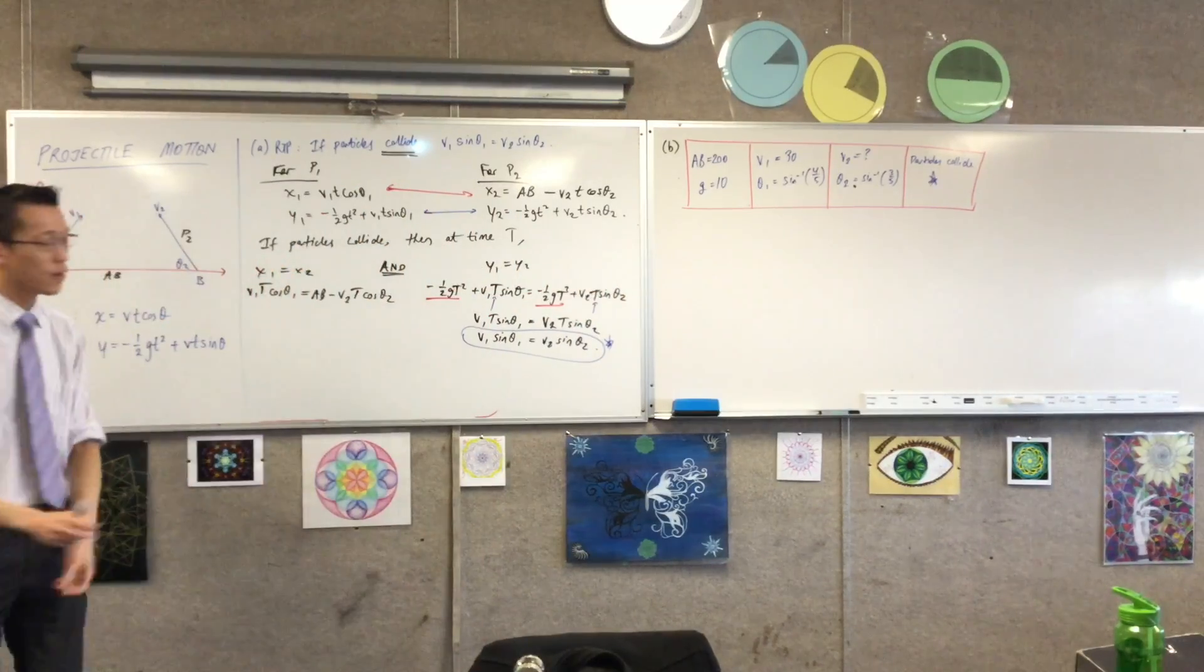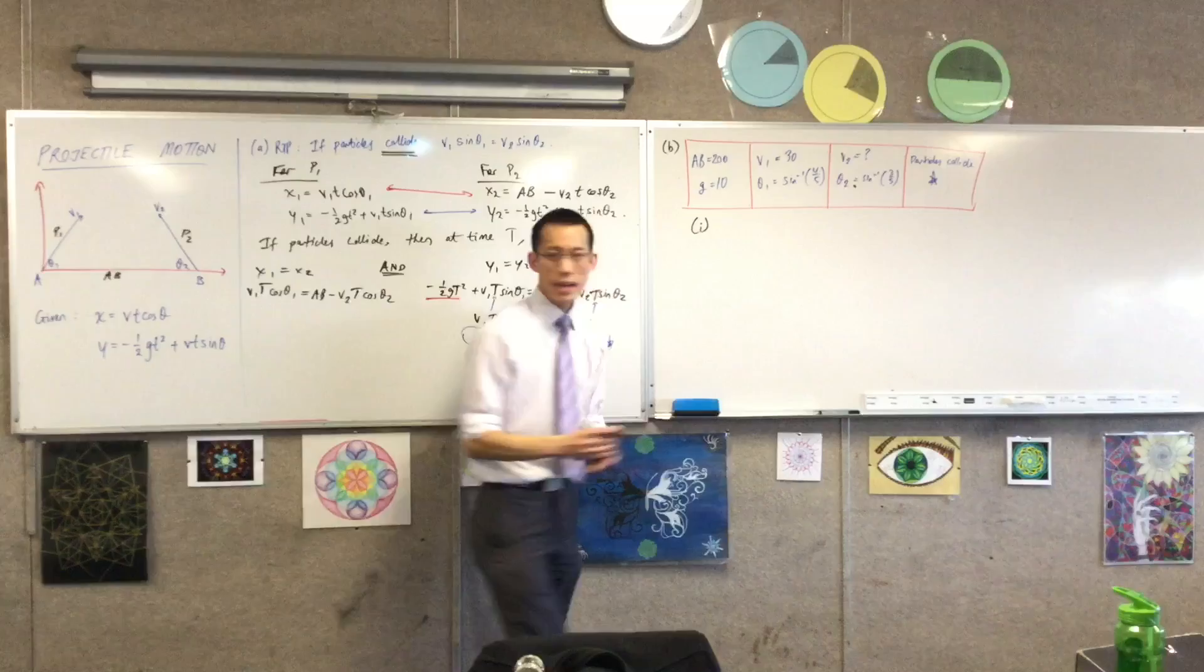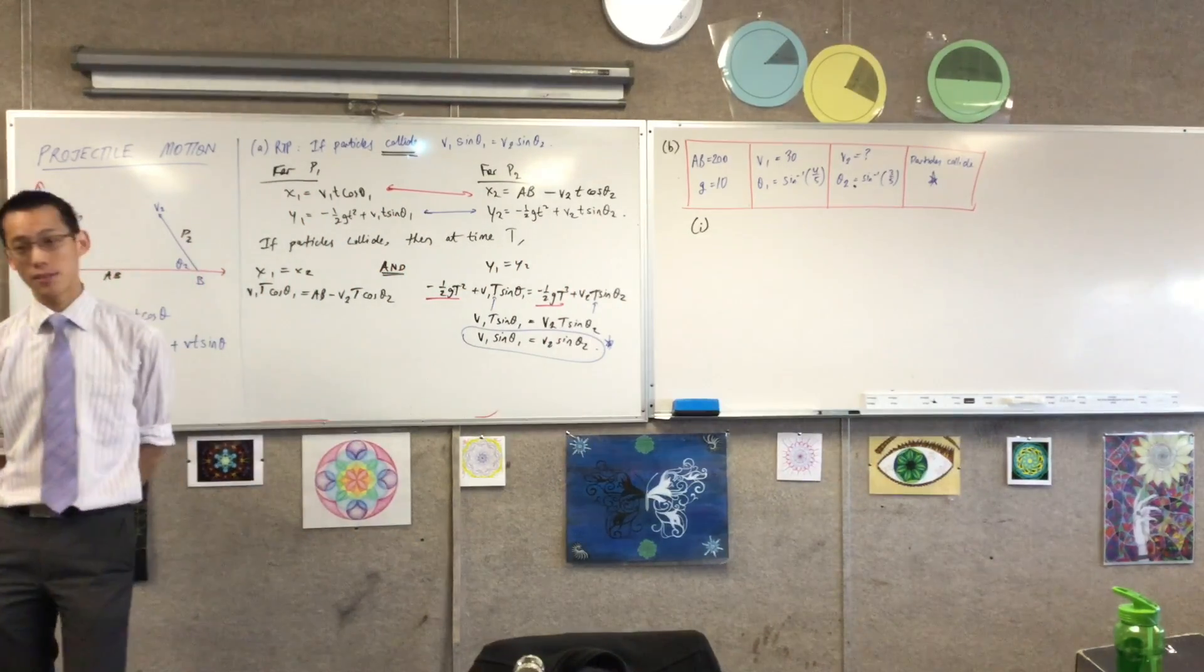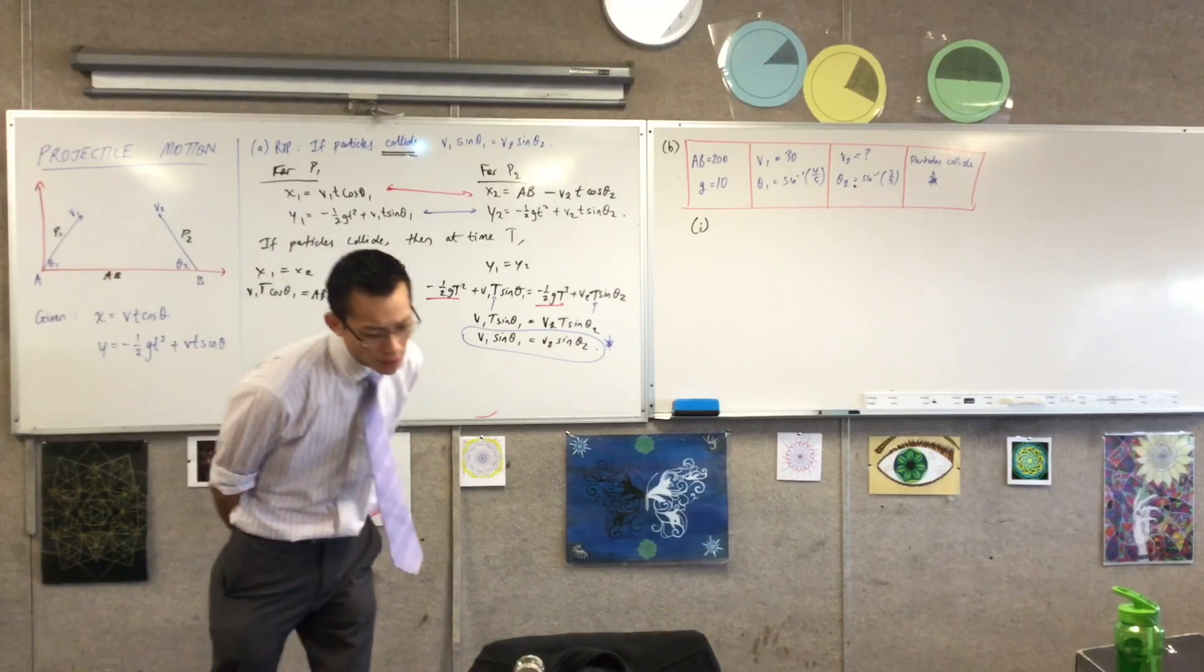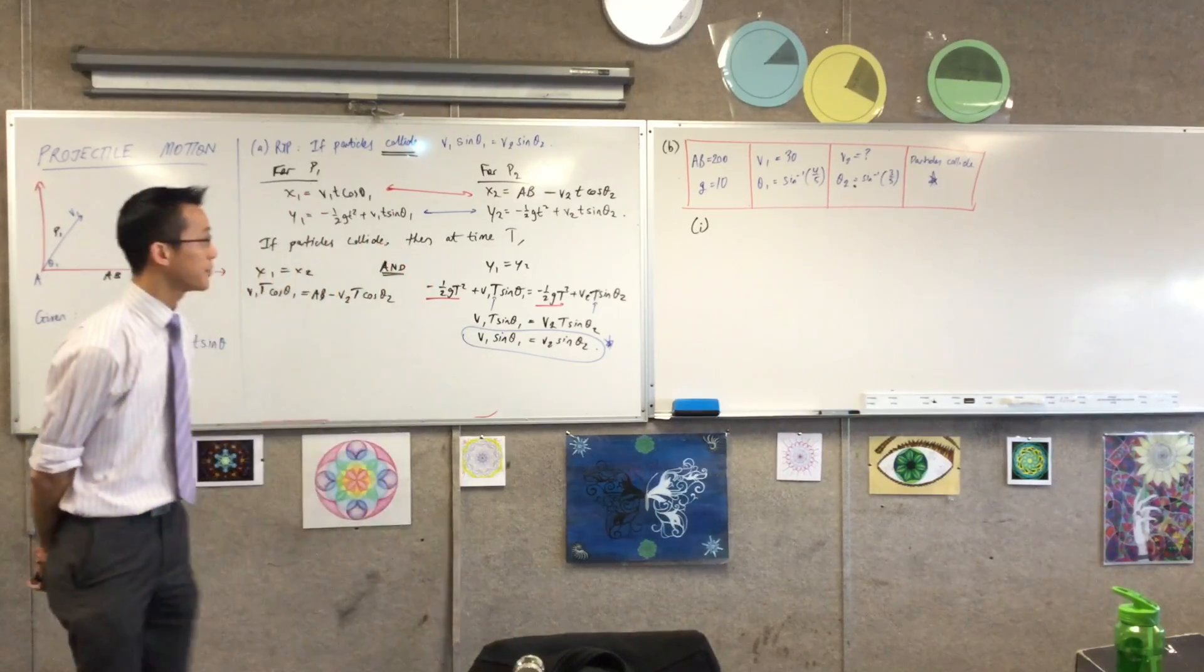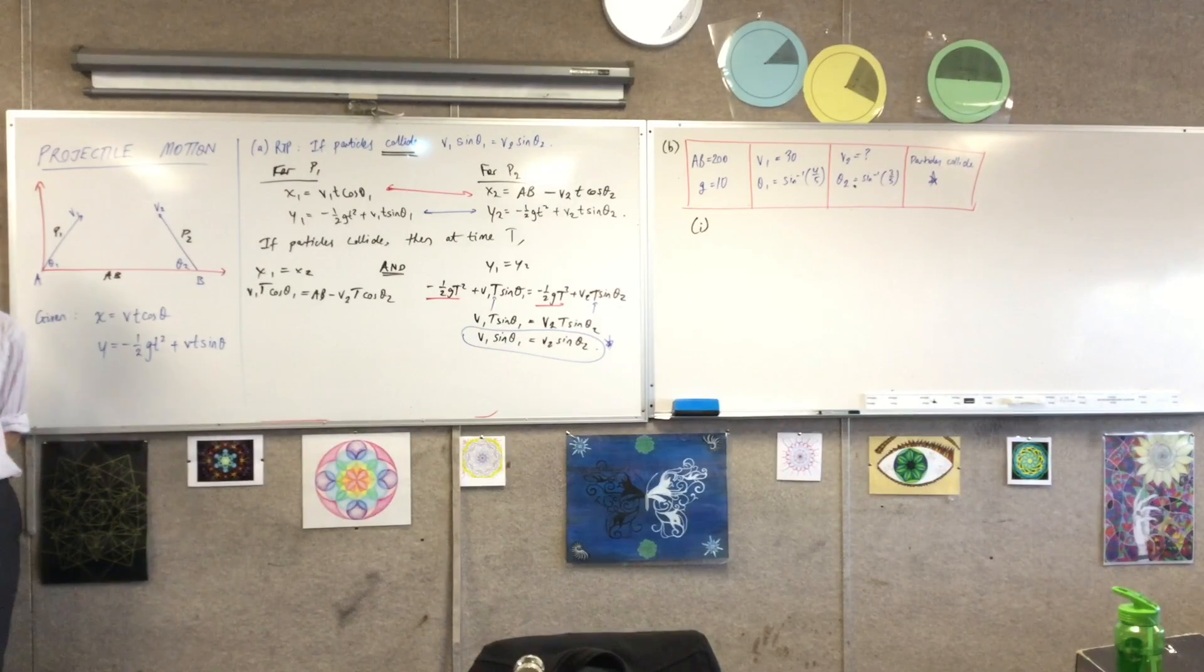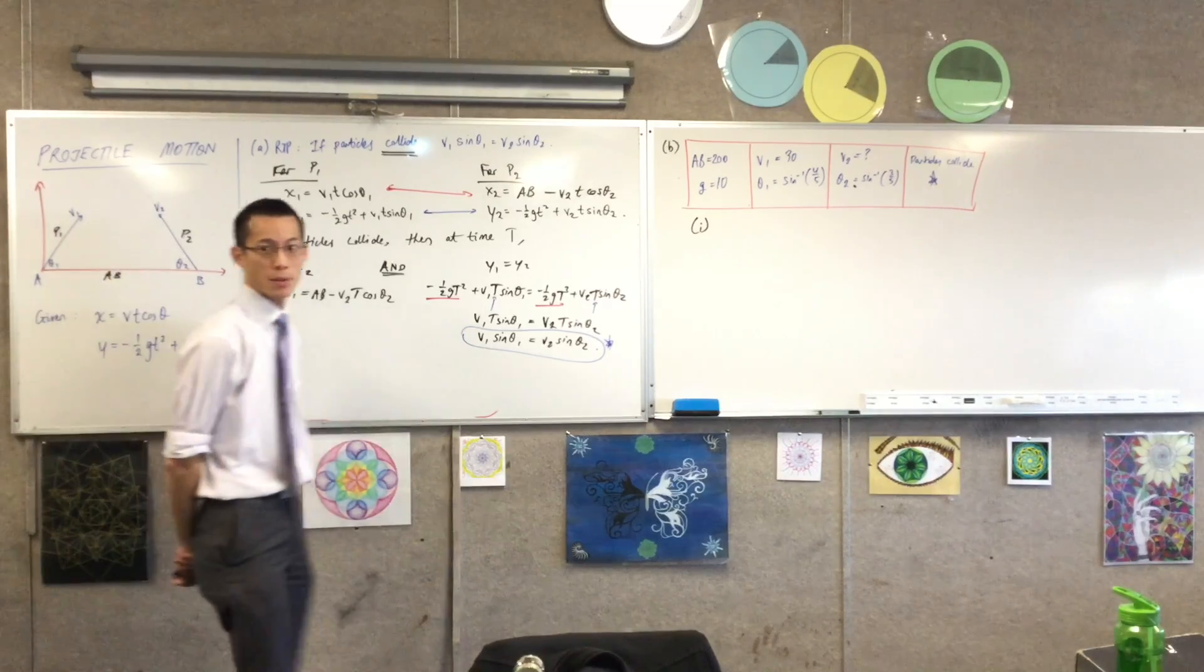Let's begin to solve. The first thing they want us to do, part one, is work out what is, if the particles do really collide, what is the velocity, the starting velocity of the second particle? And secondly, I think it's when do they collide? Let me answer the question. So, have a look at everything we've got on the board. What would you like me to do to try and find V2? That's the starting velocity of the second particle. Where would you want me to go?